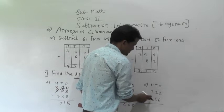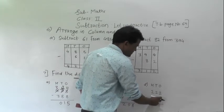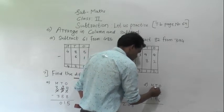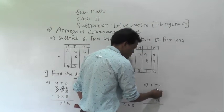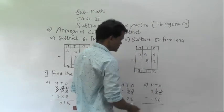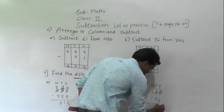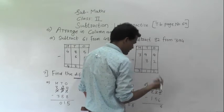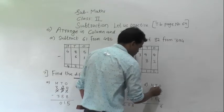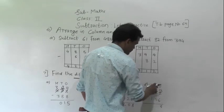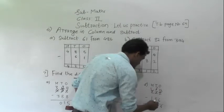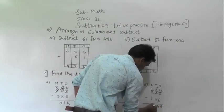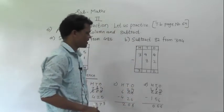Next: 222 minus 156. Here 2 minus 6 is not possible, so regroup the tens digit into 1 ten and 10 ones. Add 10 ones to 2 ones to get 12 ones. 12 minus 6 is 6. Then 1 minus 5 is not possible, so regroup 200 into 100 and 10 tens. Add 10 tens to 1 ten to get 11 tens. 11 minus 5 is 6, and 1 minus 1 is 0. So 66 is the answer.